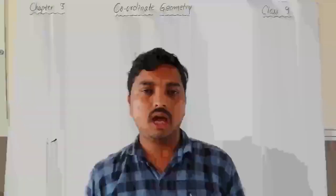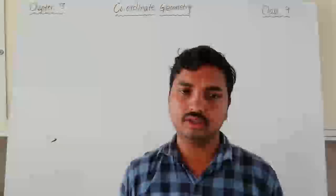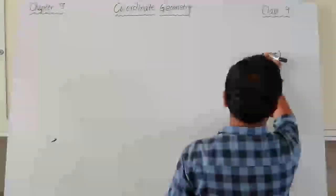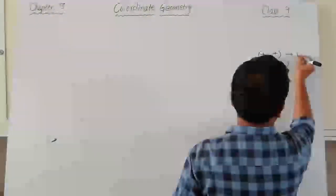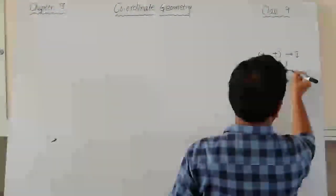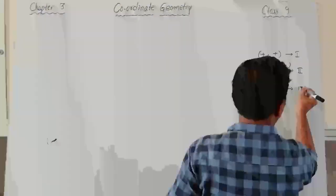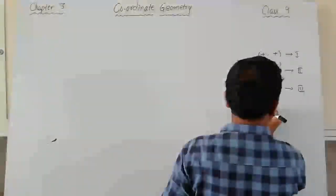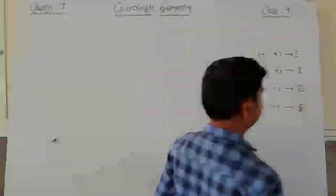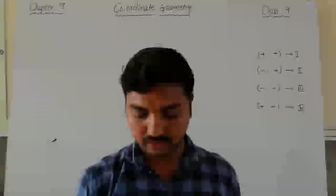A point will be given and you may be asked in which quadrant it is present. You just need to identify the signs. If both coordinates are positive, it is the first quadrant. If x is negative and y is positive, it lies in the second quadrant. If both x and y are negative, it lies in the third quadrant. If x is positive and y is negative, it lies in the fourth quadrant. Remember this for identification of quadrant.